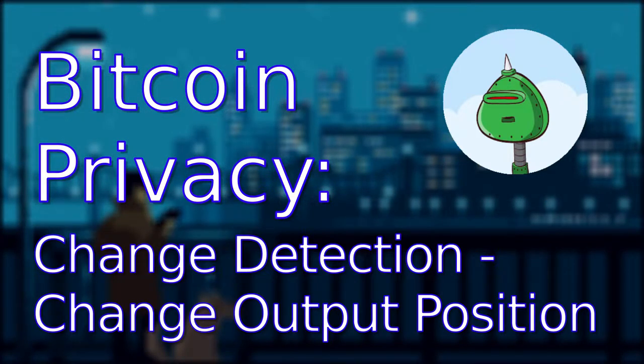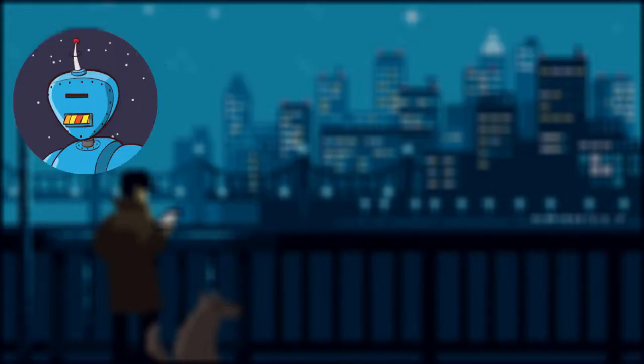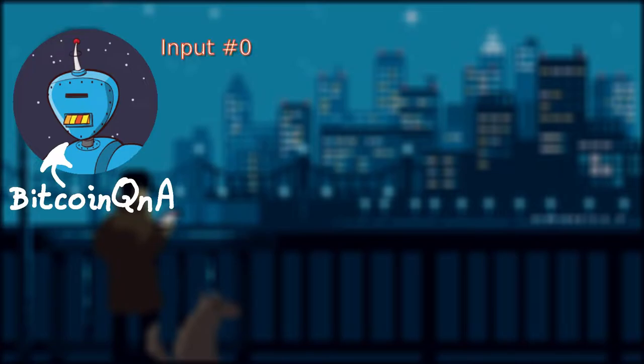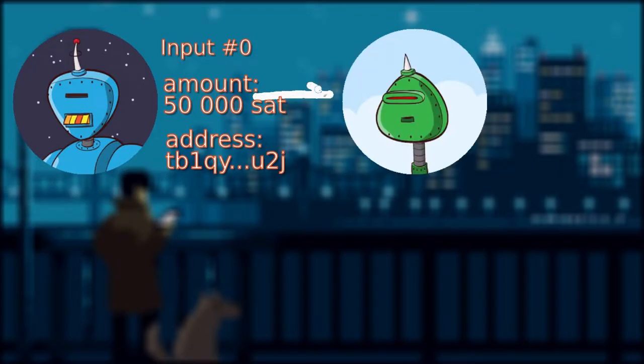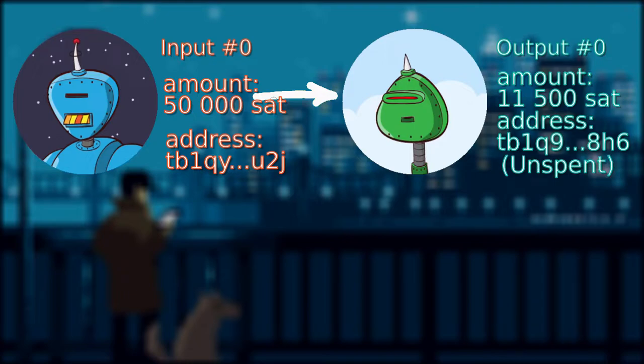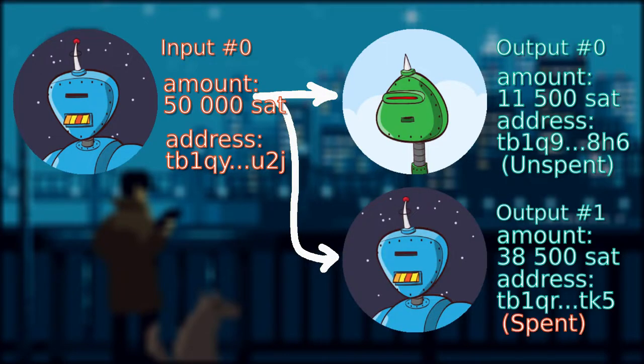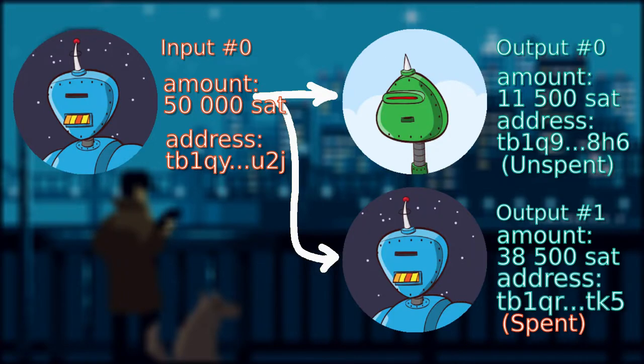Before we dive straight into the topic itself, let's start with our previous example where Bitcoin Q&A takes his 50k sat UTXO, uses 11.5k sat as payment to myself, and the remaining as change output back to himself on a different address.